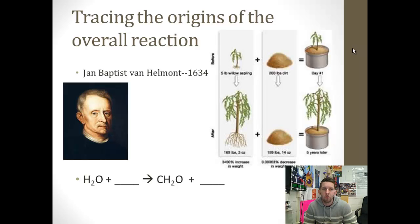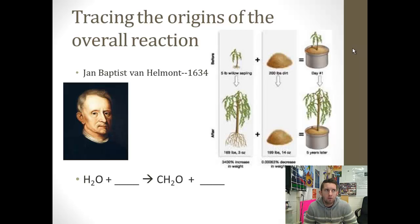Let's talk about Van Helmont. In 1634, Van Helmont did an experiment with a willow tree sapling. He wanted to grow the willow tree, so he set up a controlled experiment where he weighed the sapling — it weighed five pounds. He put it in 200 pounds of soil and let it grow for five years, giving it only water. After five years, he found that the tree had gained 164 pounds. He figured the tree must have taken that matter from the dirt, but when he weighed the soil, it had only lost two ounces.